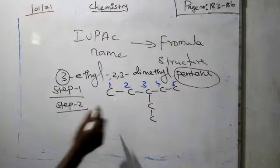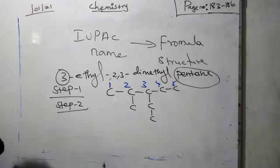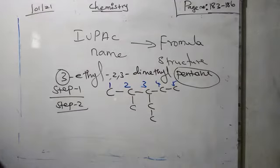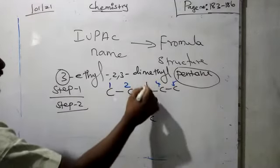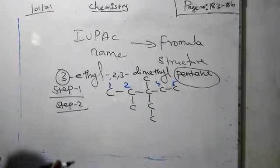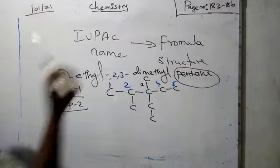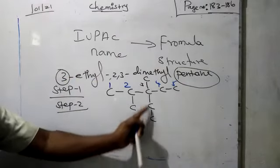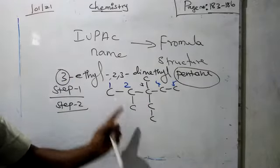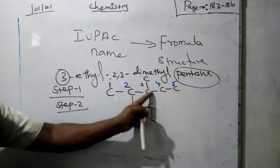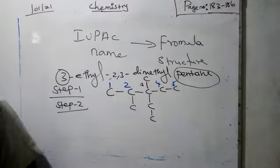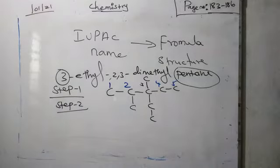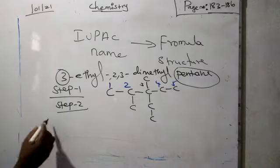So at the second carbon, we place one methyl group. At the third carbon, we already have one ethyl group, so on the other side we write another methyl group. This is the third carbon with 3-ethyl, and also 2-methyl and 3-methyl. We have now completed the carbon skeleton with all the branches. Let us go to the third step.